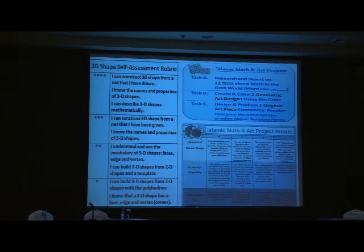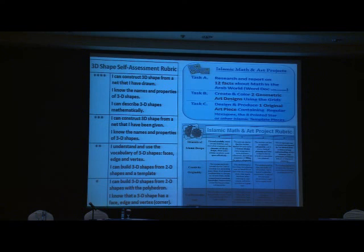Here is a rubric for the assignment done on 3D shape — the project on Islamic math and art has three components listed, along with a rubric. Students were supposed to do their own self-evaluation, explain and justify that evaluation to the teacher, and were then given a final assessment based on that.